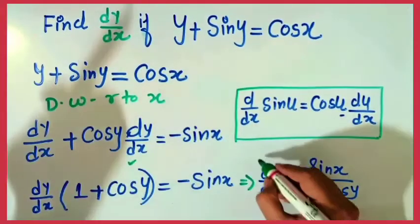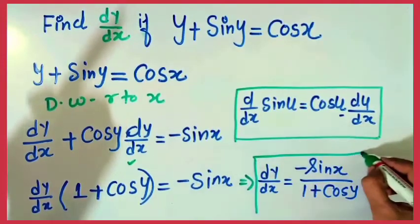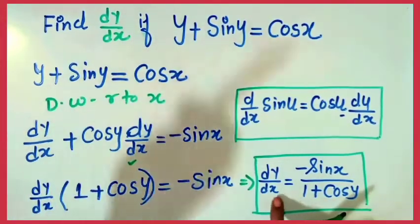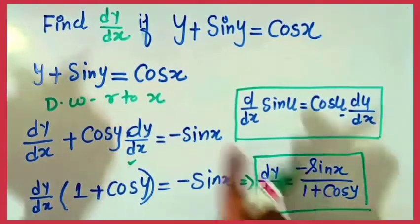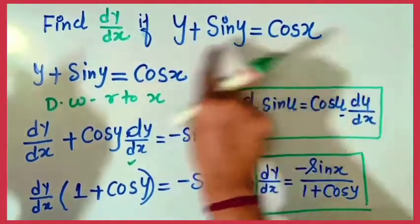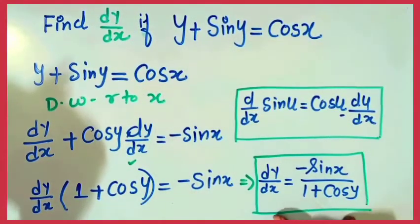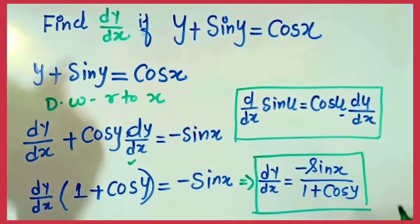Point to be noted: in implicit functions, dy/dx is in a mixed form of x and y. Meaning when we find dy/dx in implicit functions, we get it easily but it is expressed in terms of both variables x and y.